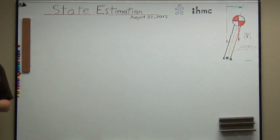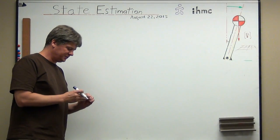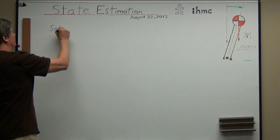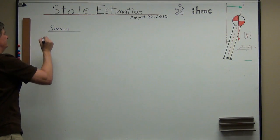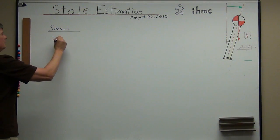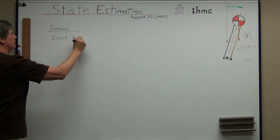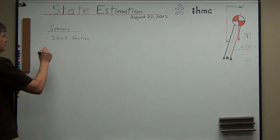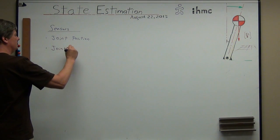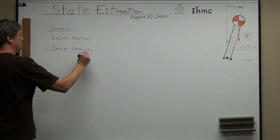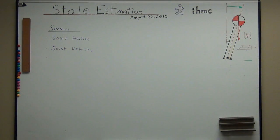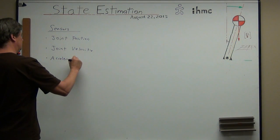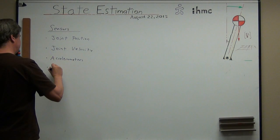Let's start by talking about, with a humanoid robot, what sensors are typically available and what we want to measure. What sensors are typically available? Position, velocity — sometimes velocity, but not always. IMU: you usually have accelerometers and typically rate gyros.